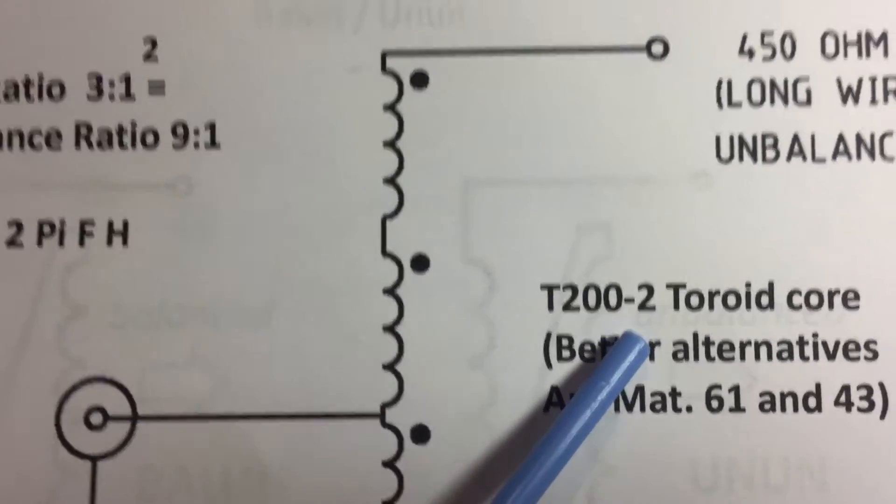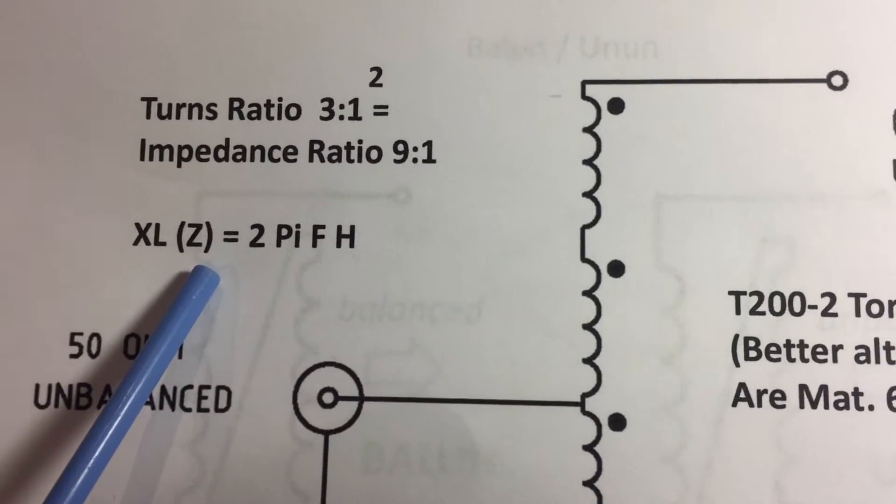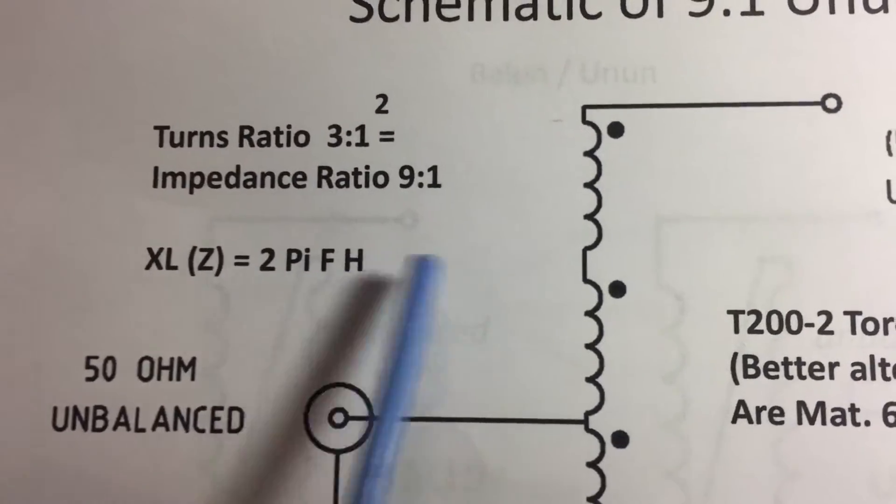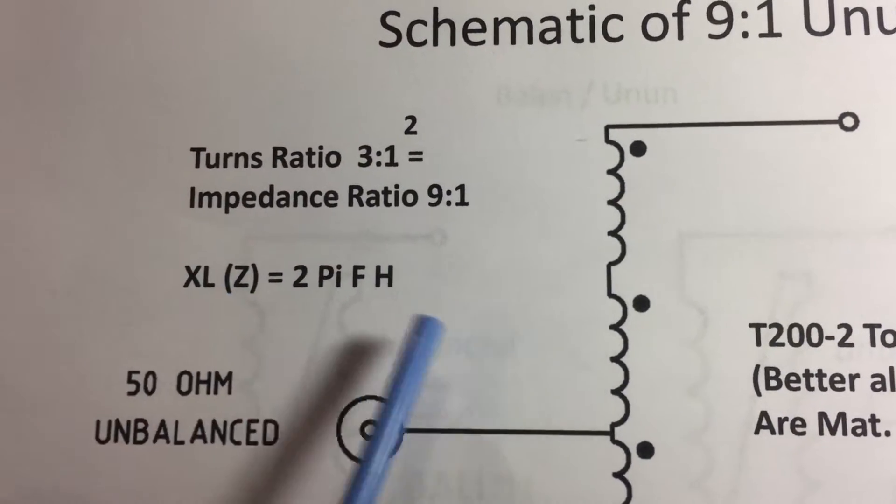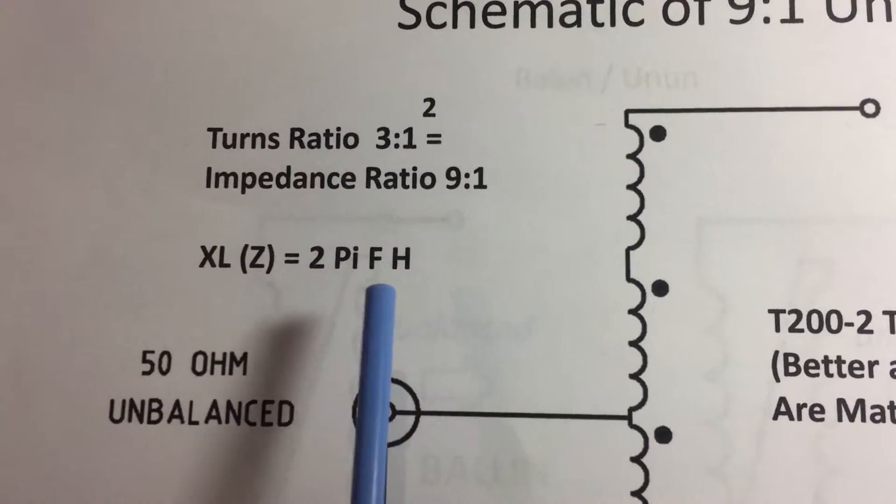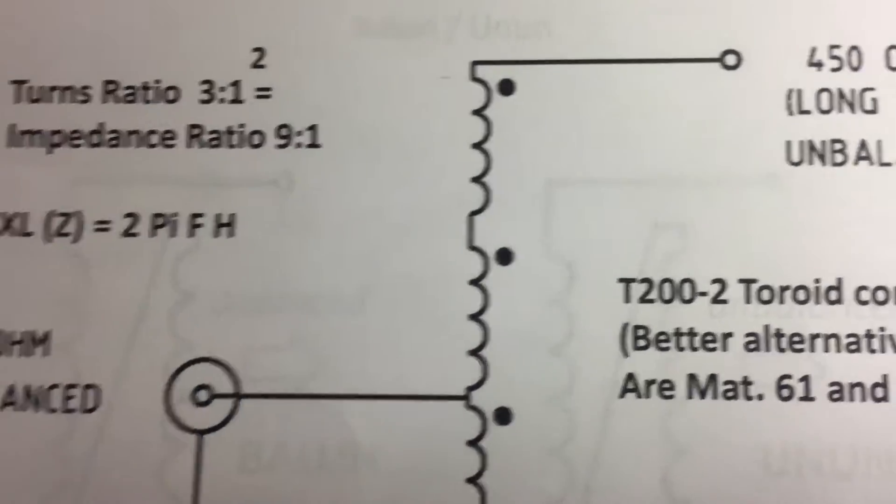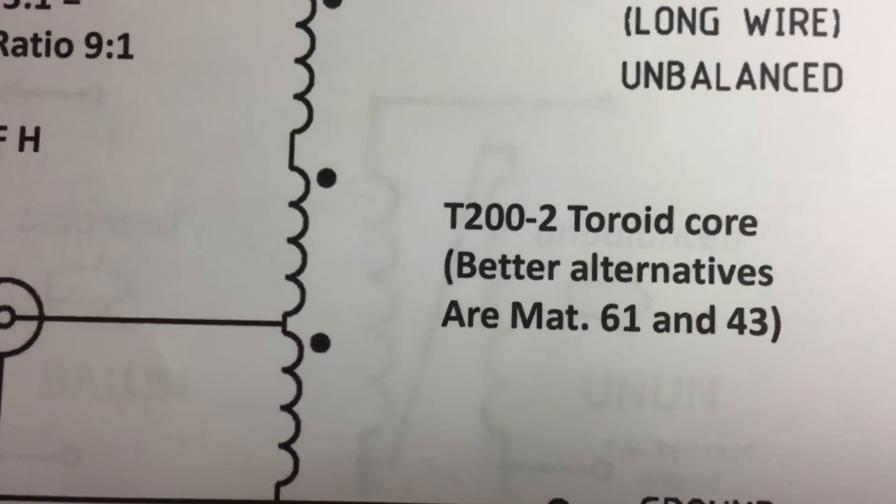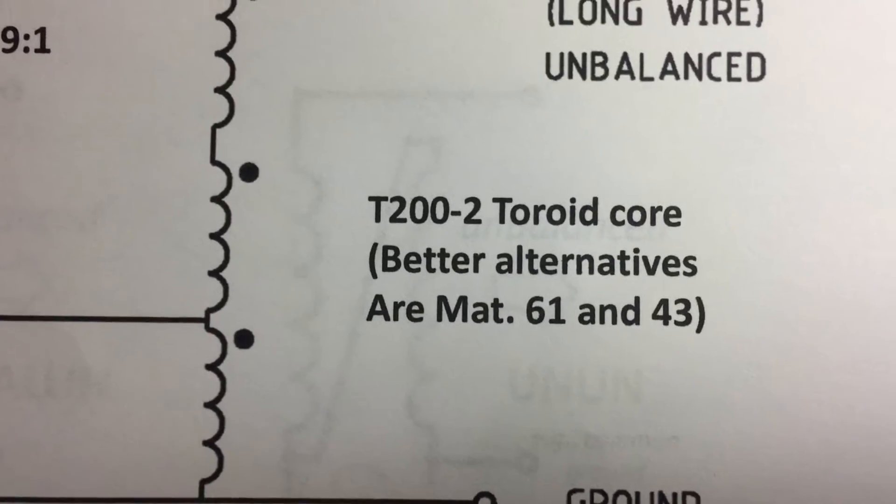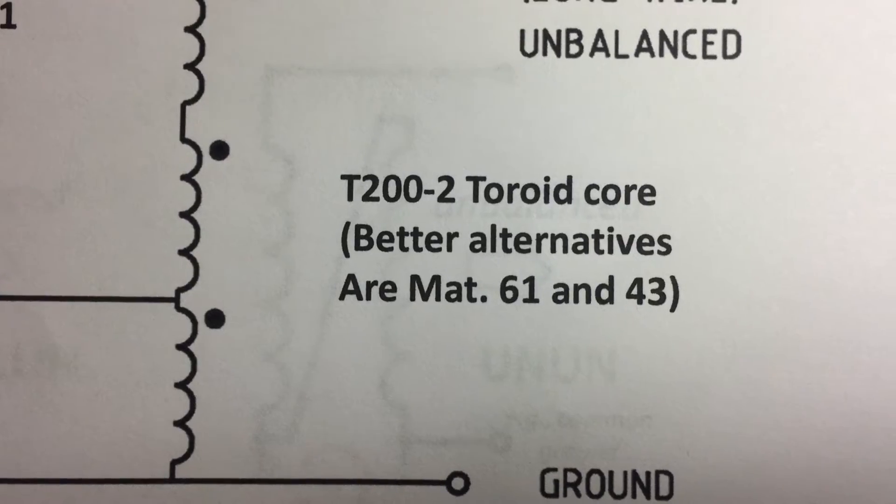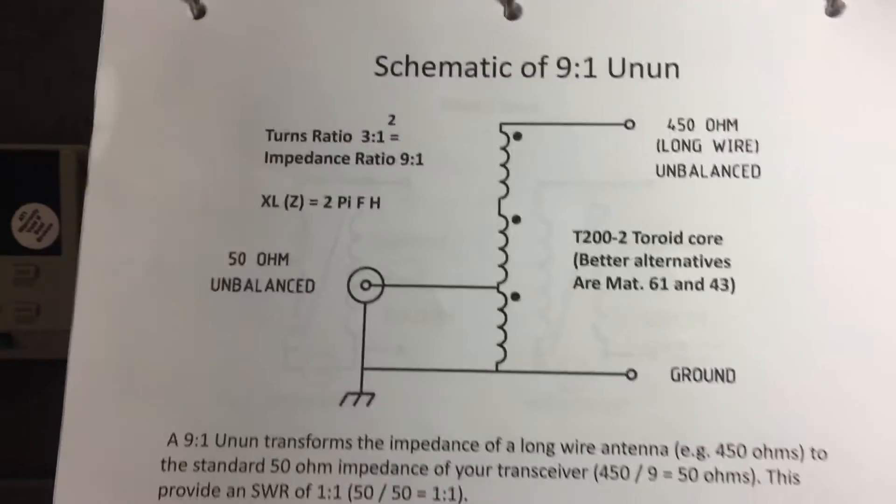So why is that important? Well, inductive reactance or the impedance equals 2 times pi times frequency times inductance in henries. So the lower the permeability, the lower the inductive reactance will be and the lower the impedance. So you can see here as we increase frequency, we'll increase the impedance. As we decrease frequency, we're going to decrease the impedance and at lower frequencies it doesn't perform very well.